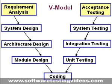In the requirement analysis phase of the V model, the requirements of the proposed system are collected by analyzing the needs of the user. This phase is concerned with establishing what the ideal system has to perform; however, it does not determine how the software will be designed or built. Usually, the users are interviewed and a document called the User Requirements document is generated.